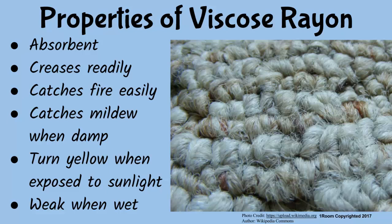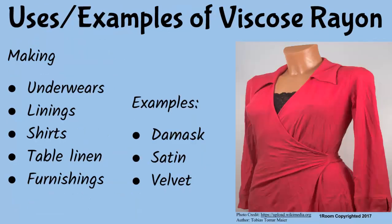Viscose rayon has properties similar to those of cotton since it is structurally similar to cotton fiber. For example, it is absorbent, creases readily, catches fire easily, and develops mildew when damp. In addition, viscose rayon turns yellow when exposed to sunlight for long periods and is weaker when wet than when dry.